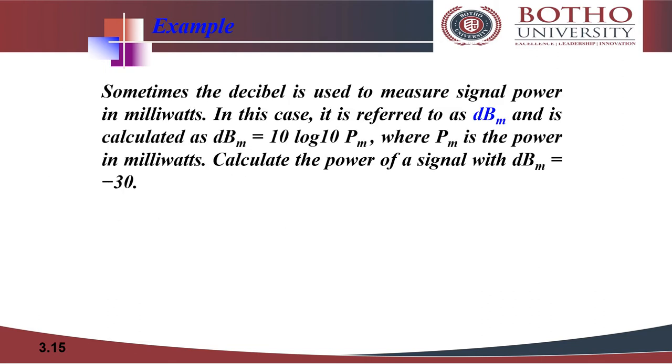Let us see another scenario or example where the decibel is measured in milliwatts. Sometimes the decibel is used to measure signal power in milliwatts. In this case it is referred to as dBm and is calculated as dBm equals 10 log Pm to the base 10, where Pm denotes the power in milliwatts. Now let's calculate the power of a signal with dBm equals negative 30.